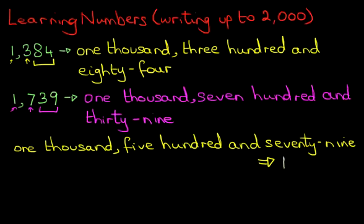Okay, let's write that down. We've got one thousand, because it's a thousand, let's put a comma, one thousand, that's the one over there done. Now we've got five hundred and seventy-nine, one thousand, five hundred and seventy-nine.